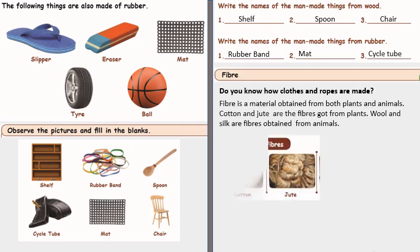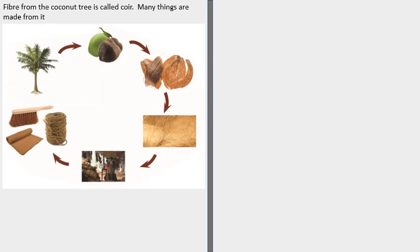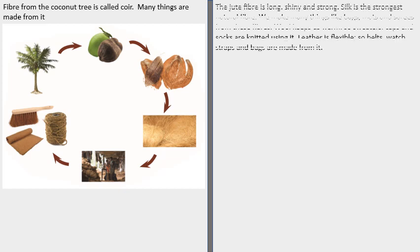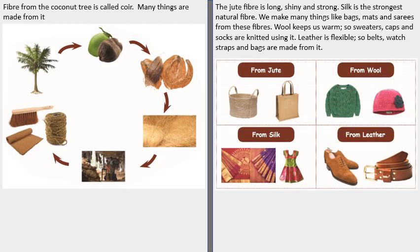Let's talk about fiber. Do you know how clothes and robes are made? Now fiber is a material obtained from both animals as well as plants. Examples are cotton and jute are fibers from plants whereas wool and silk are fibers obtained from animals. Now here is a picture of the coconut tree and the fiber from the coconut tree is called as coir and from this many things can be prepared. Now the jute fiber it is long, shiny and strong. Again when we talk about silk, silk is the strongest natural fiber. We make many things like bags, mats, sarees from these fibers.